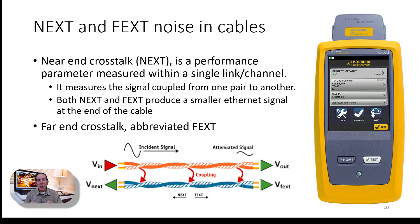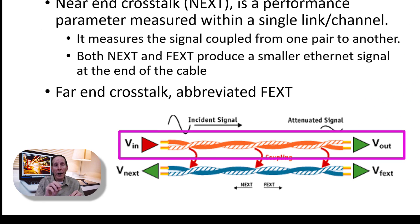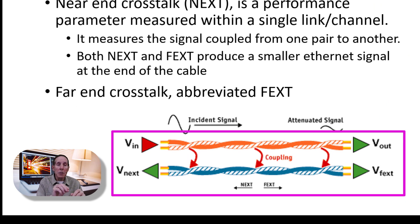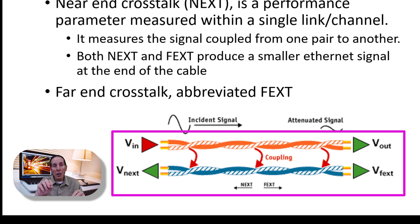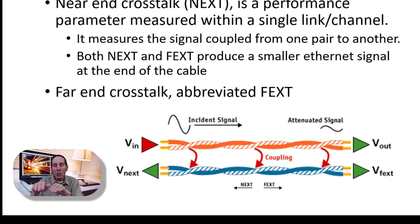The next type of noise in cables is abbreviated NEXT and FEXT — basically it's crosstalk. You can see in the picture that two pairs of wires are inducing signal into the bottom pair of wires. If the induction of energy is close to the transmitter, it's NEXT. If the induction of the signal is further down the cable, it's called FEXT. The result of both NEXT and FEXT is that it produces a smaller, attenuated signal.